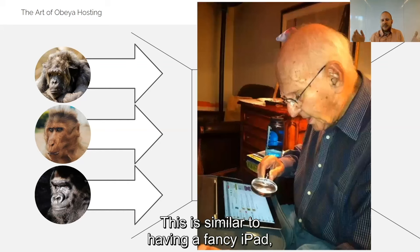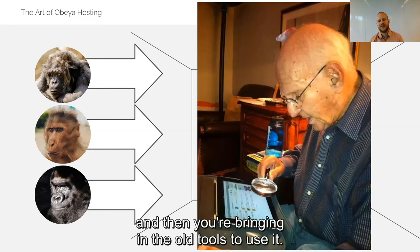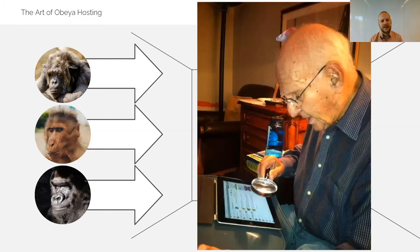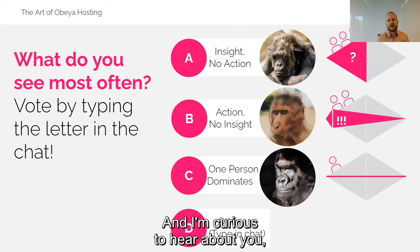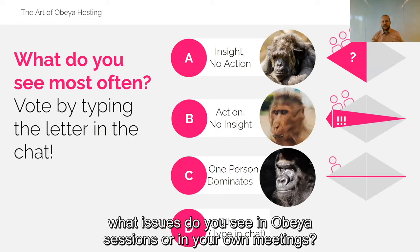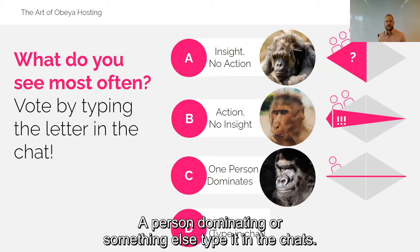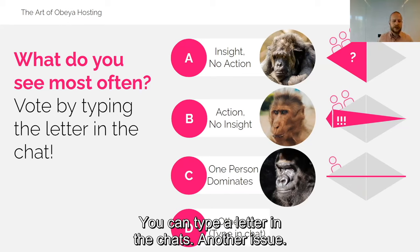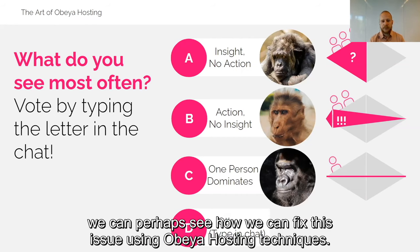This is like having a fancy iPad and then bringing in the old tools to use it. This is what I think hosting should really solve — how to create a space of co-creation. I'm curious: what issues do you see in Obeya sessions or in your own meetings? Is it insight with no action, action without insight, a person dominating, or something else? Type it in the chat. If we have time at the end, we can see how to fix this issue using Obeya hosting techniques.